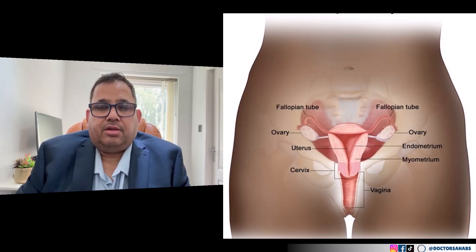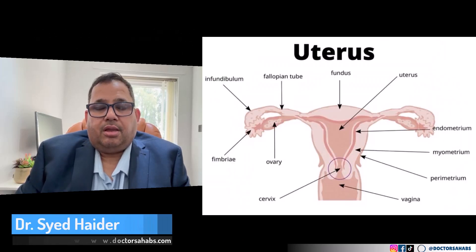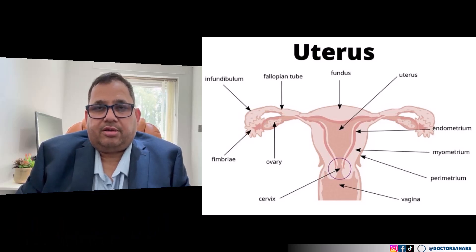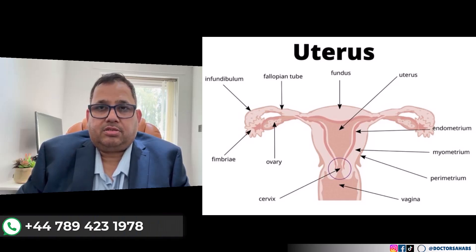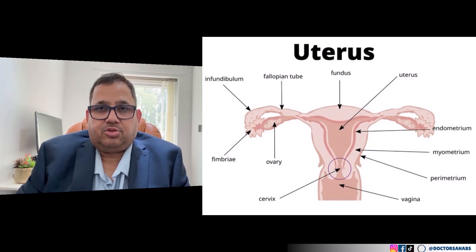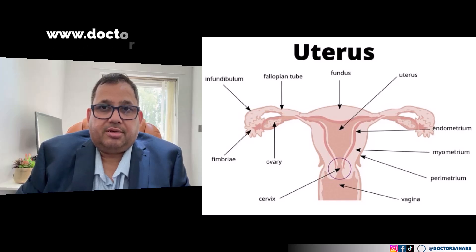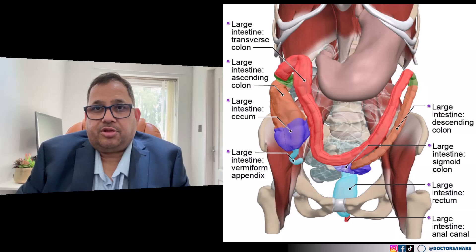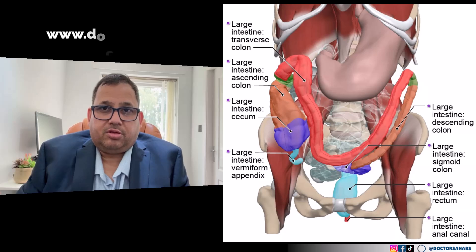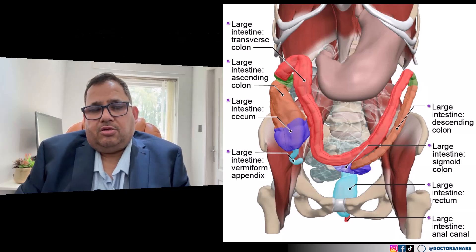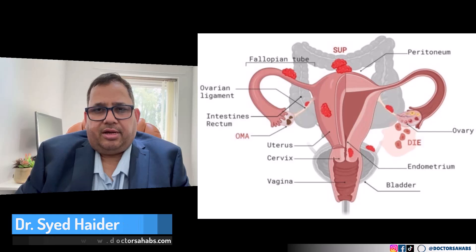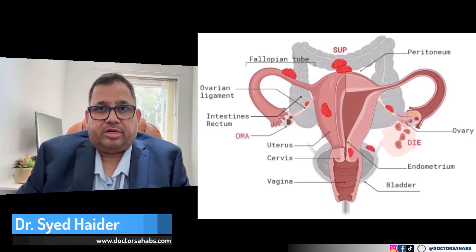Other affected areas include the uterus and surrounding structures like the ovarian ligament, broad ligament, pouch of Douglas, and pelvic side walls. Sometimes endometrial tissue is also found in the urinary bladder, sigmoid colon, or on the ureter as well. So what happens when endometrial tissue is present outside the uterus?